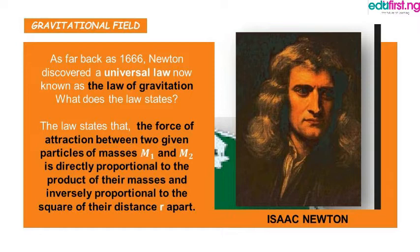The law states that the force of attraction between two given particles of masses M1 and M2 is directly proportional to the product of their masses and inversely proportional to the square of their distance apart. In nature, every particle attracts a body to itself due to gravitational force.